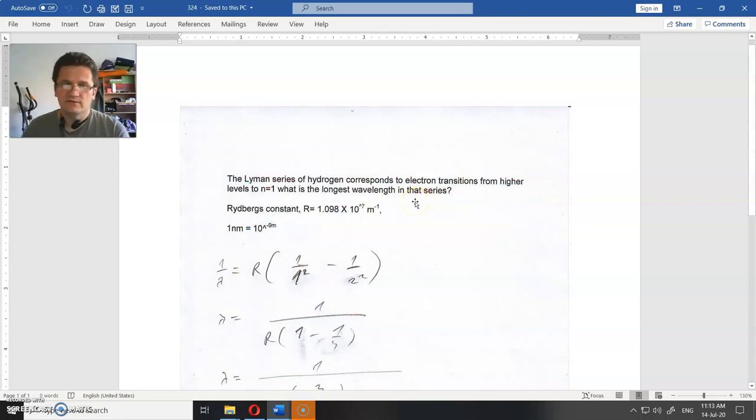The longest wavelength corresponds to the smallest energy. The smallest energy is for the smallest transition. So you have some positive core and you have N=1, N=2, N=3, N=4.